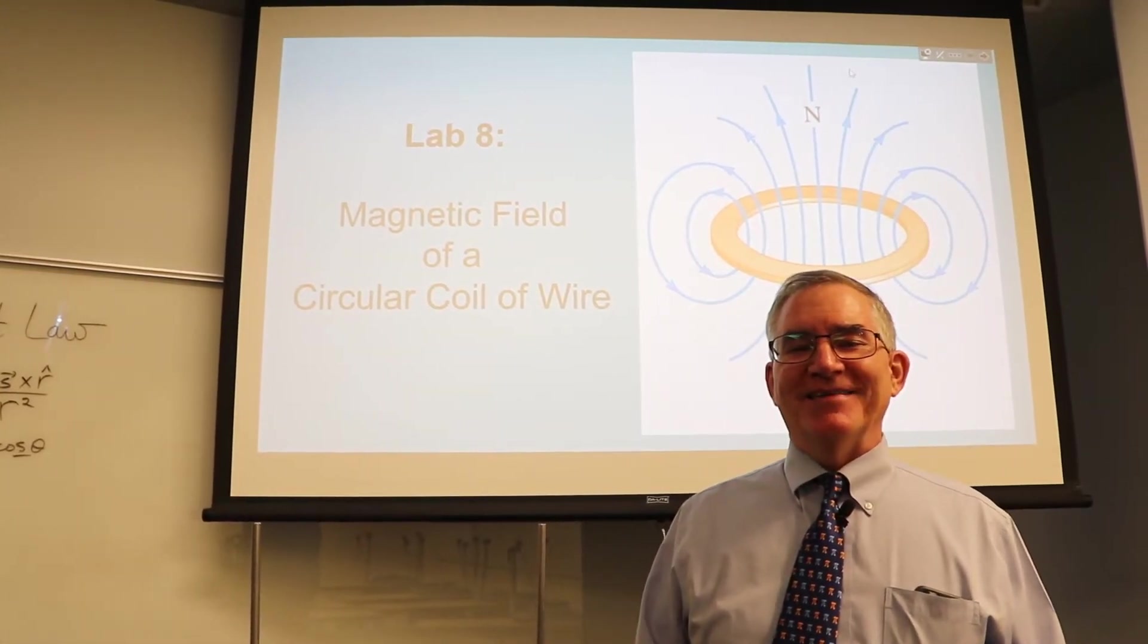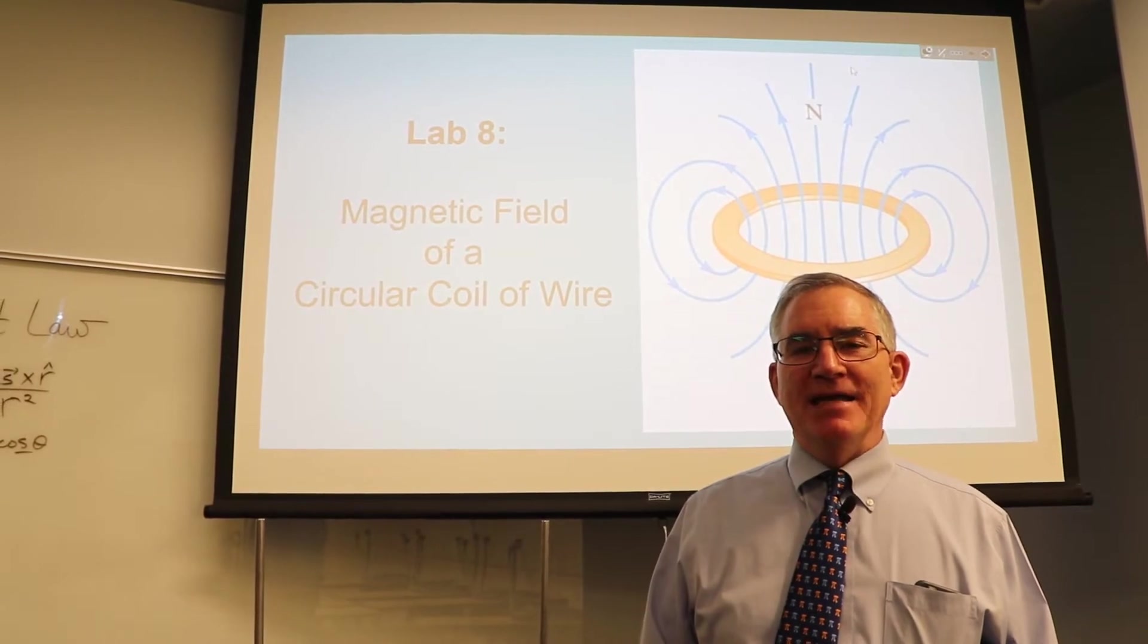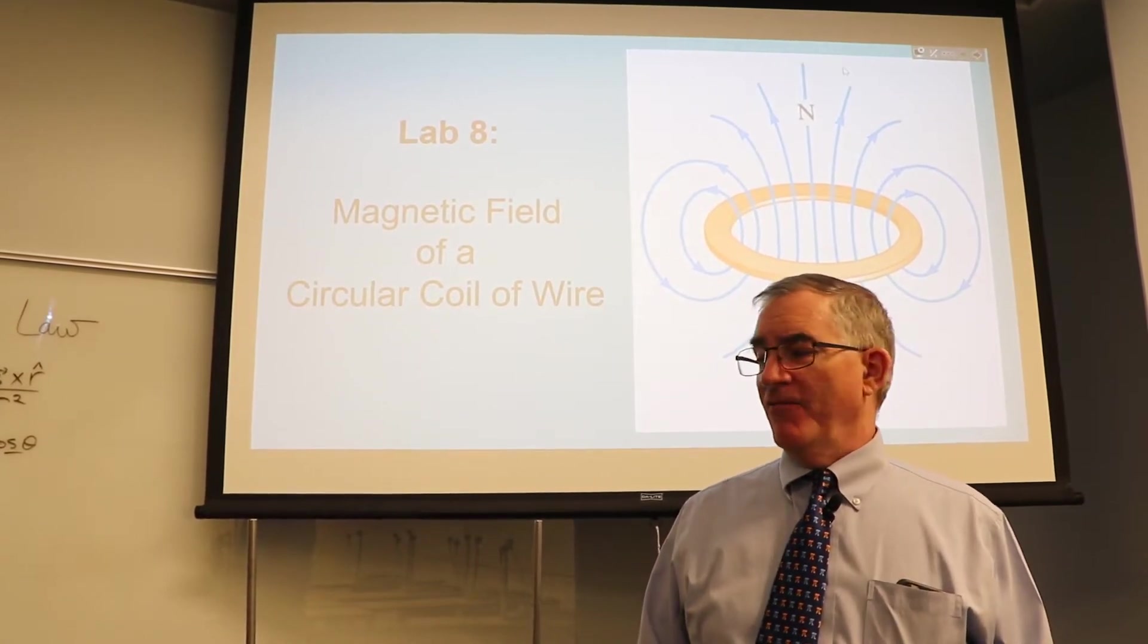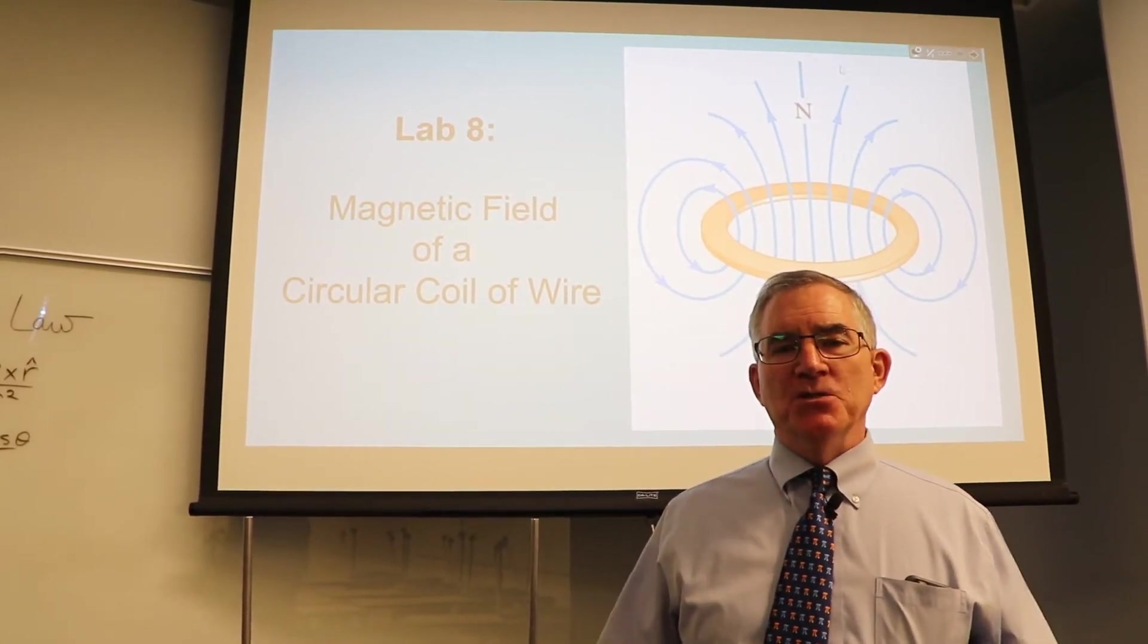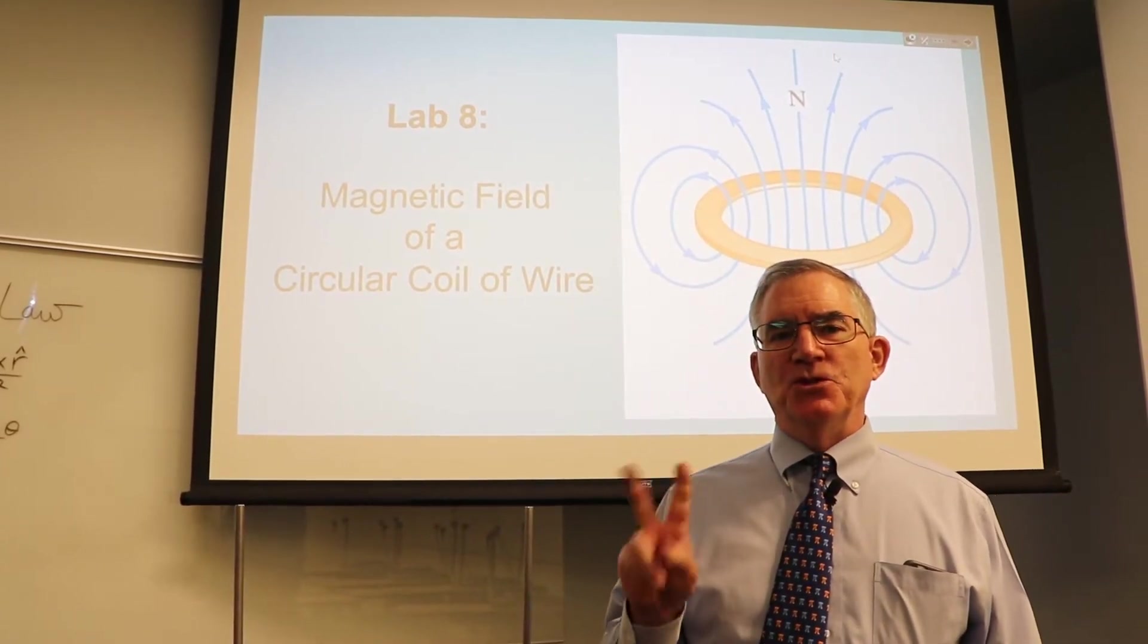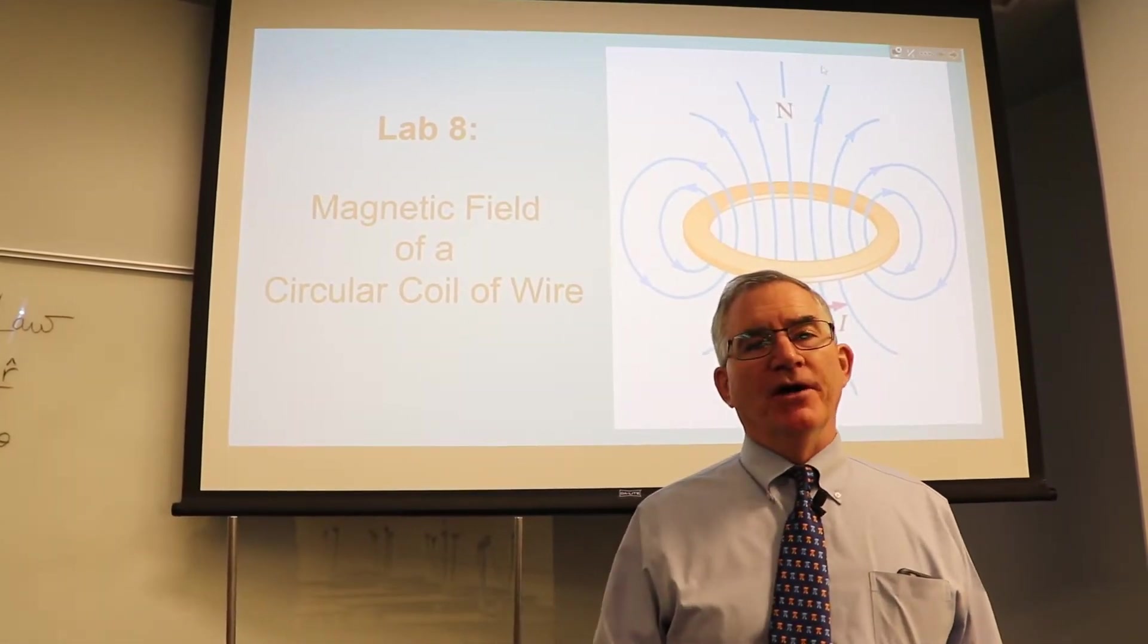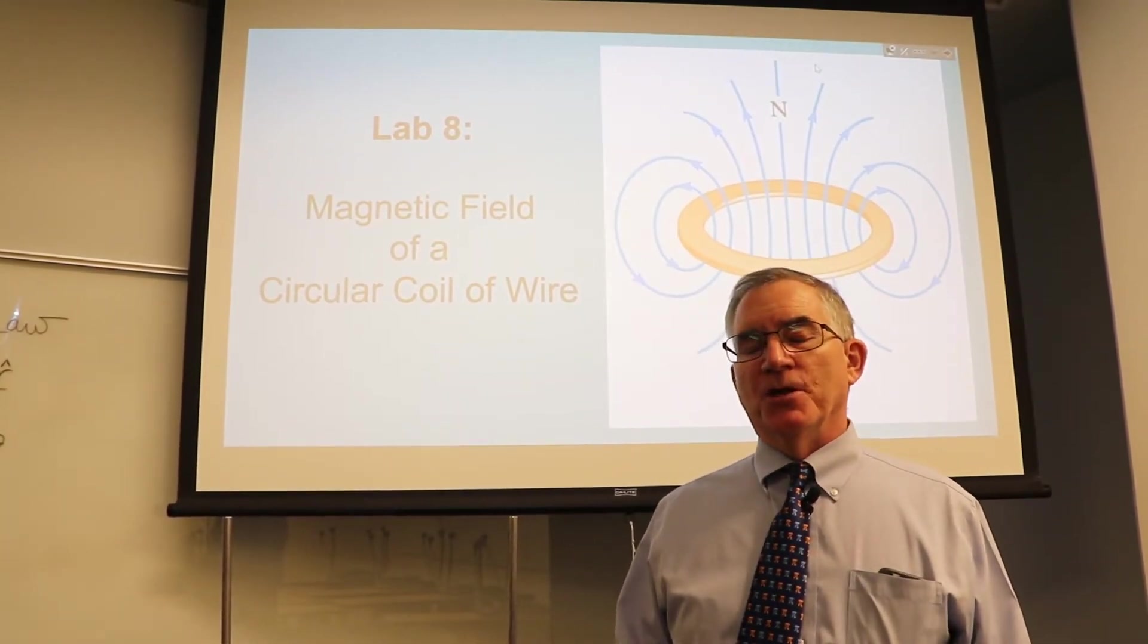Welcome back to the experimental part of Lab 8, the axial magnetic field of a circular current loop. We have a current loop with 500 turns. When you actually do this lab, you have to use two coils - one with 200 turns and one with 500. But for this demonstration, I'm using just the 500 turn coil because more turns produce a stronger B field.